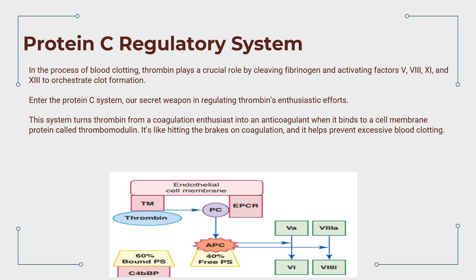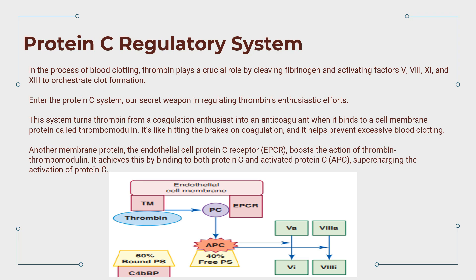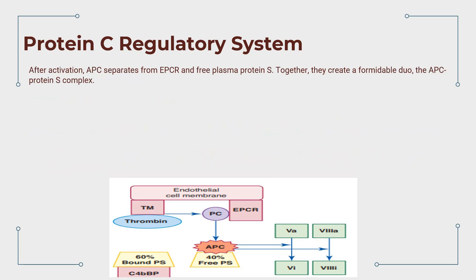Another membrane protein, the endothelial cell protein C receptor, EPCR, boosts the action of thrombin-thrombomodulin. It achieves this by binding to both protein C and activated protein C, APC, supercharging the activation of protein C. After activation, APC separates from EPCR and locks arms with its partner, free plasma protein S, creating the formidable APC-Protein S complex.